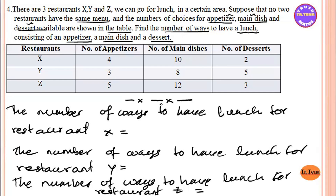So you can see the x and y values — that's what we can do. When you look at the first example, the restaurant has an appetizer, a main dish, and a dessert. So that gives us 0 to 4 times, 10 times, 3 times, 3 times — so it's 6.